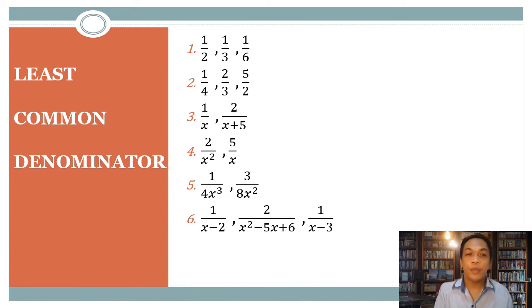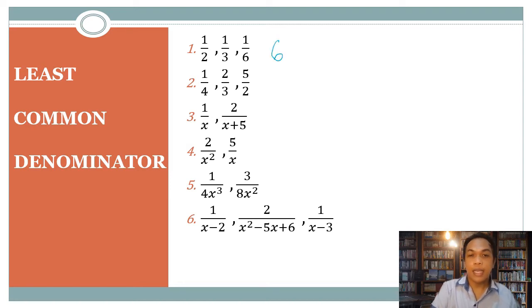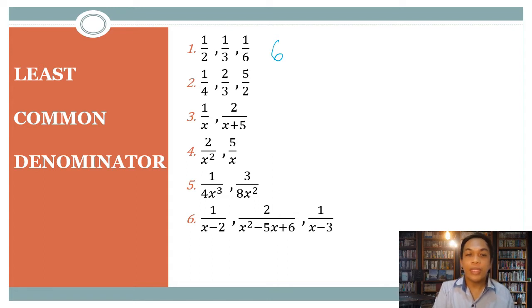For number one, we have one half, one third, and one sixth. Our LCD is six, because six can be divided by two, three, and six.